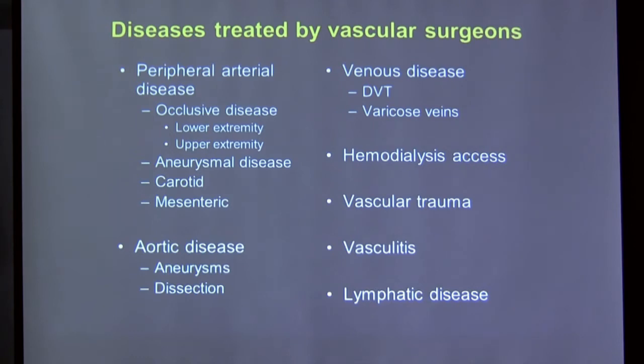Diseases vascular surgeons treat include peripheral arterial disease — blockages in the lower extremities and arms — aneurysmal disease where blood vessels enlarge abnormally, carotid artery blockages that feed the brain and carry stroke risk, mesenteric and kidney artery disease, and aortic disease. The aorta is the largest blood vessel, running from the heart down into the belly where it splits in two. It is prone to aneurysms and dissections, where vessel layers separate and threaten blood supply to vital organs.